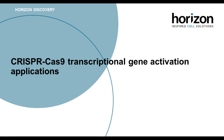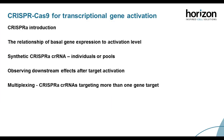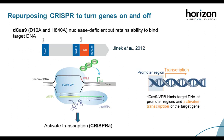Now on to our final and very exciting application: transcriptional activation with CRISPR-A. CRISPR-Cas9 can be repurposed from a gene editing tool to a transcriptional regulation system by introducing two point mutations in the RuvC and HNH nuclease domains, making the Cas9 nuclease deficient. This modified Cas9 is commonly referred to as deactivated Cas9, or dCas9. This non-cutting Cas9 still retains the ability to bind guide RNAs and target DNA in a sequence-specific manner.